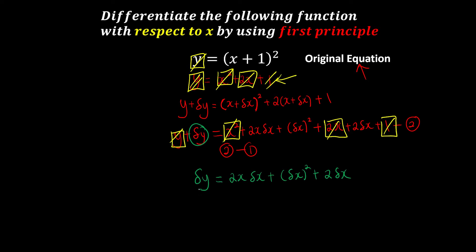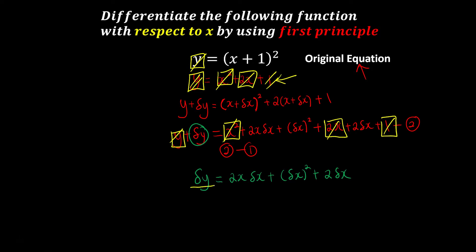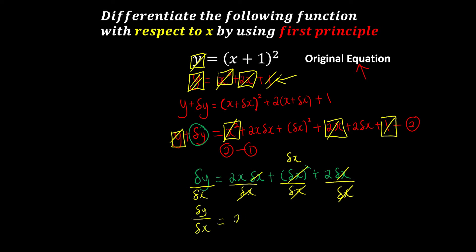Our objective is to find delta y over delta x, so we divide both sides of the equation by delta x. We can cut off the delta x terms and simplify whatever is not related. So we can say that delta y over delta x is equivalent to 2x plus delta x plus 2.